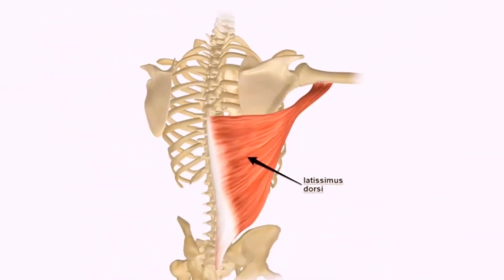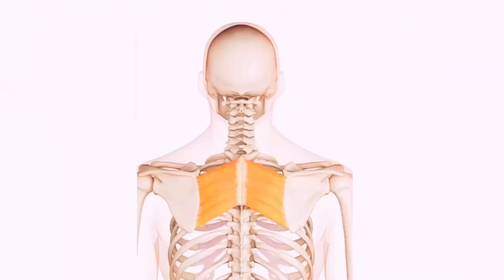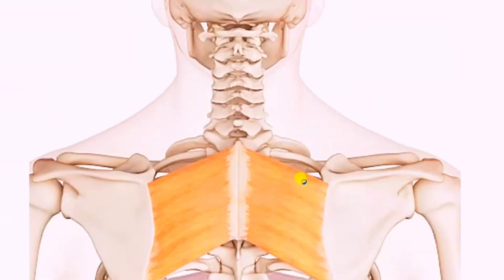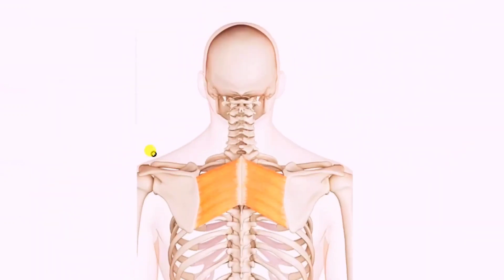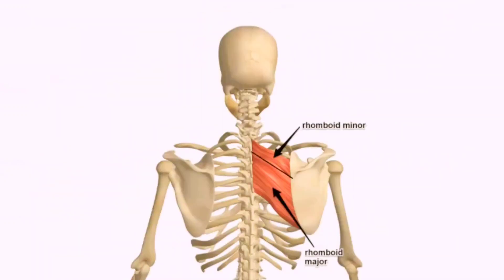The next muscle is rhomboid major, originating from the T2 to T5 spinous processes and inserting at the medial border of the scapula. Below it we have rhomboid minor, also visible here alongside rhomboid major.